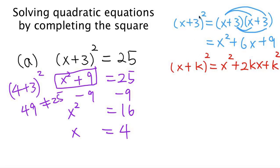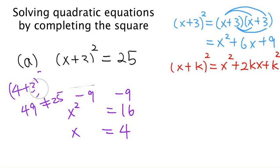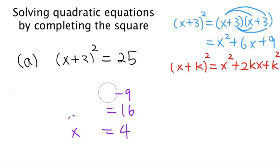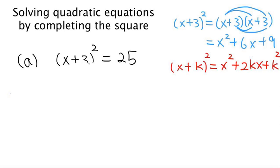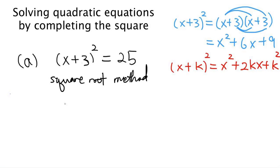Now we know how to expand this out correctly, but the thing is we actually don't want to expand the left hand side. We can just apply the square root method. Whenever we have something squared on the left hand side, if that thing squared equals a number on the right hand side, then that thing is plus or minus the square root of the right hand side. That's the square root method.